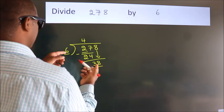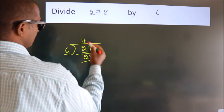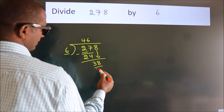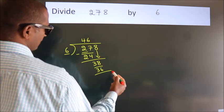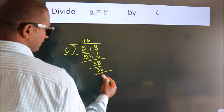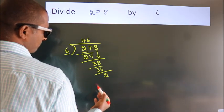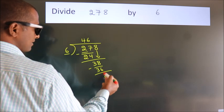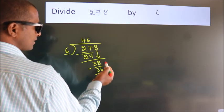38 in the 6 table is 6 times 6, which is 36. Now we subtract and get 2. After this, there are no more numbers to